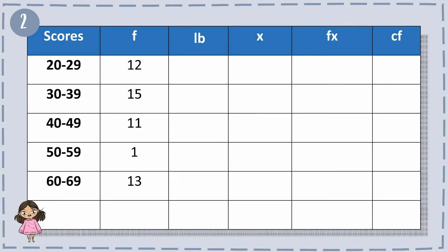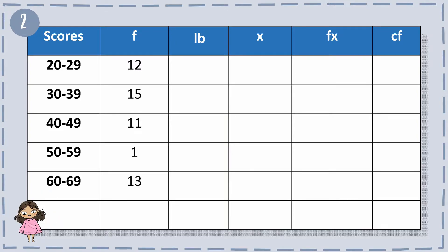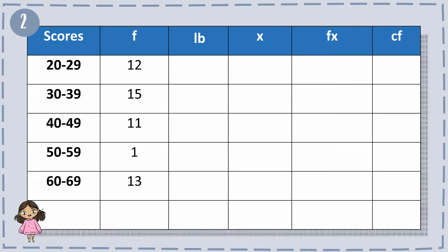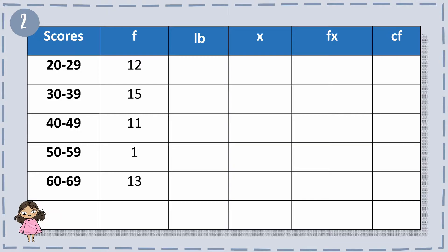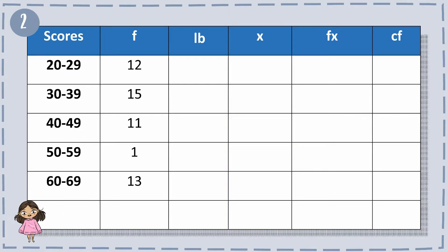For example number 2, we have the scores of 20 to 29, 30 to 39, 40 to 49, 50 to 59, and 60 to 69, with the frequencies of 12, 15, 11, 1, and 30, in a total of 52.